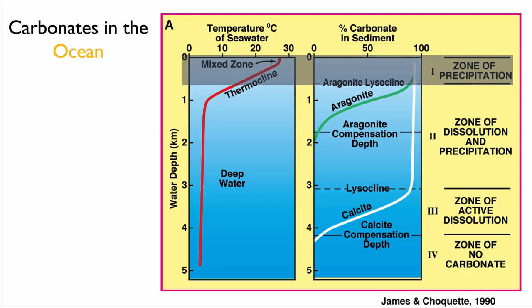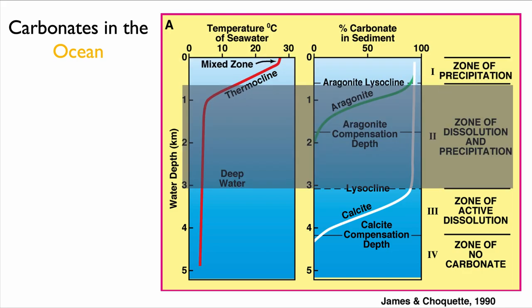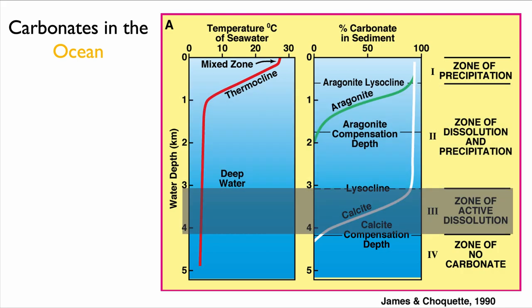Below the aragonite lysocline, we have Zone 2, at which point we are no longer precipitating aragonite — we have a chance of dissolving aragonite — but we are still precipitating calcite. So we can have both dissolution and precipitation: precipitation of a cement or dissolution of carbonate minerals. Below this, we are below the calcite lysocline, where the rate of dissolution of calcite exceeds the rate of precipitation.